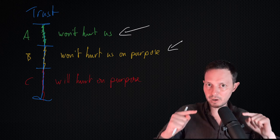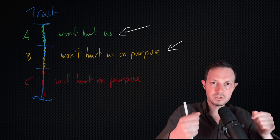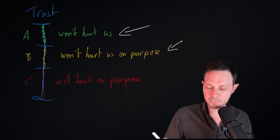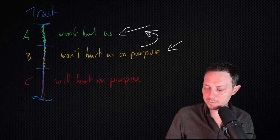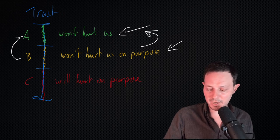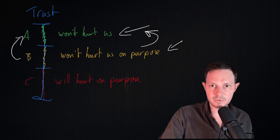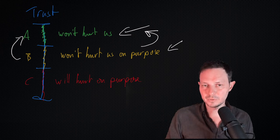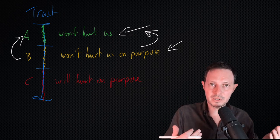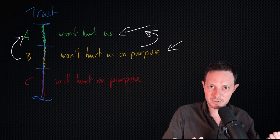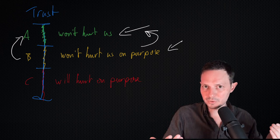However, if we are in category B and we hurt other people and it's not on purpose, we aspire to be part of category A. We would prefer to not hurt other people if it can be avoided. Sometimes we hurt other people as a byproduct, but if we can avoid hurting other people, we prefer to do so.